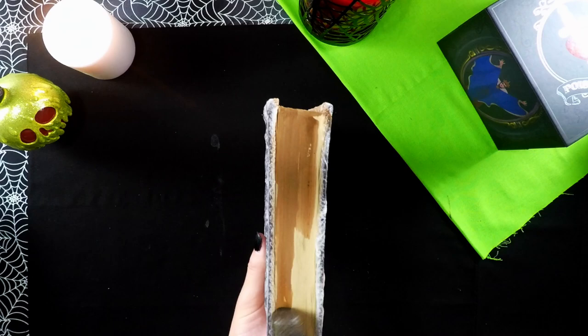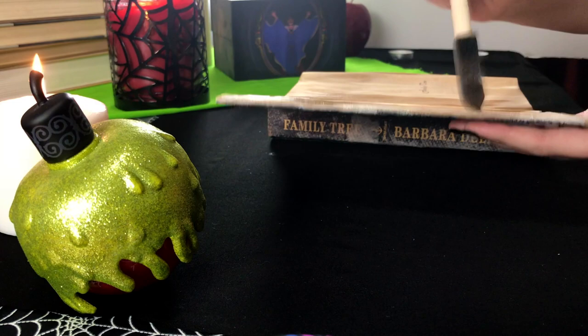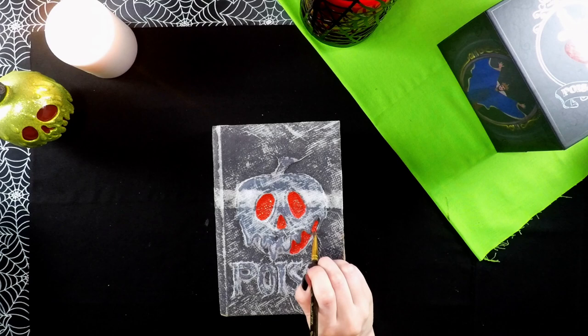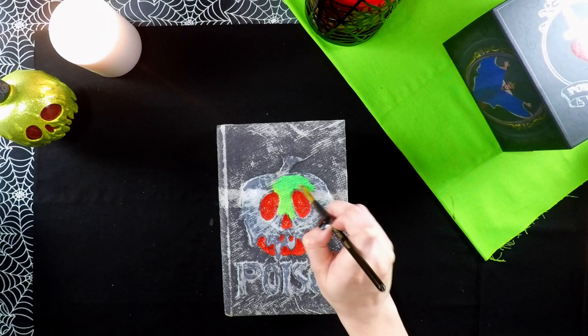Now that both covers are dry I'm going to age the paper. I'm doing this by using a mixture of brown paint and water and just using a paint brush to apply on top. And now for my favorite part which is painting the design you created. The paint I used is the acrylic paint that you can get in the small little bottles at Walmart.